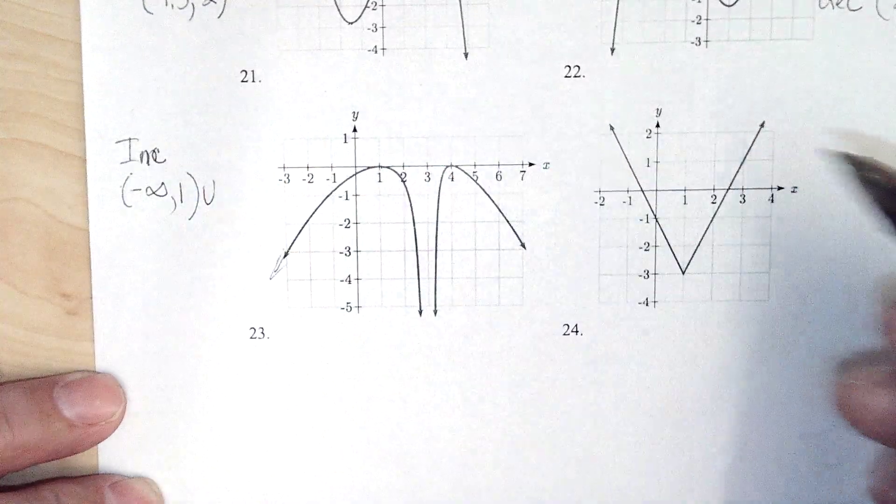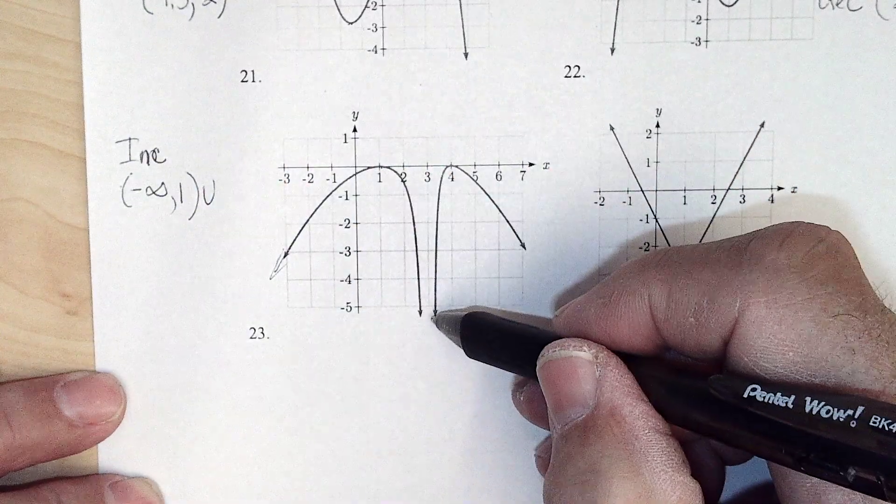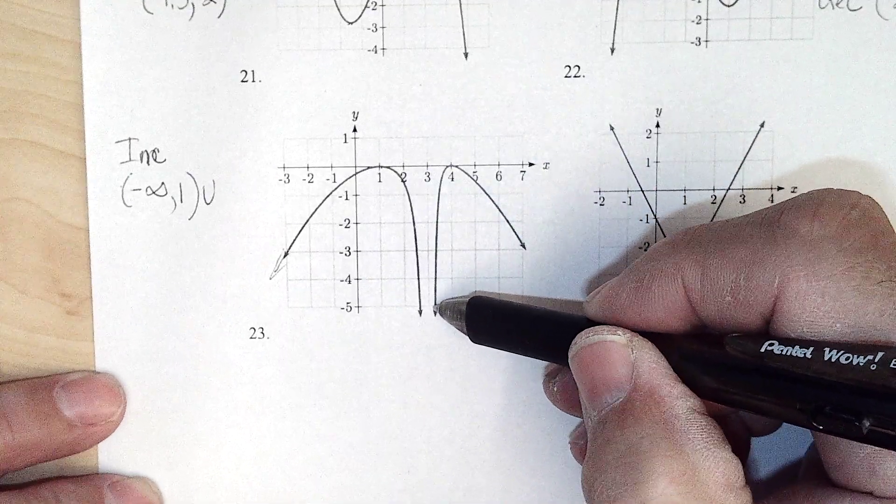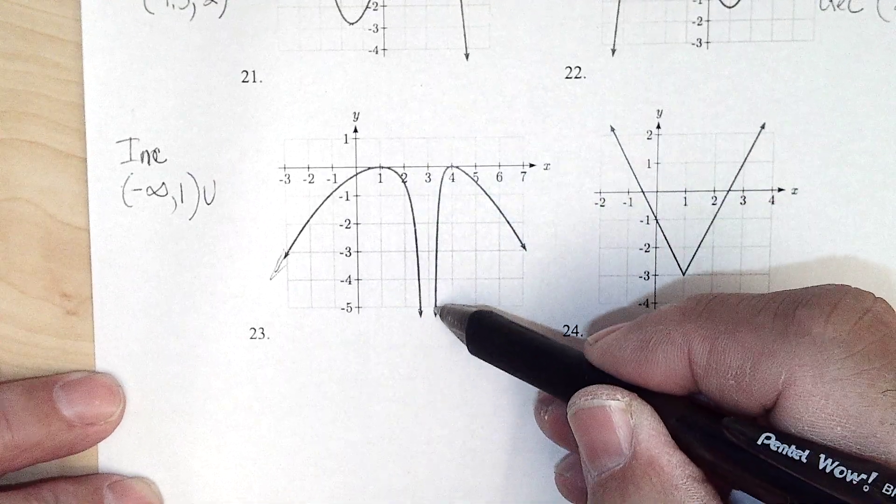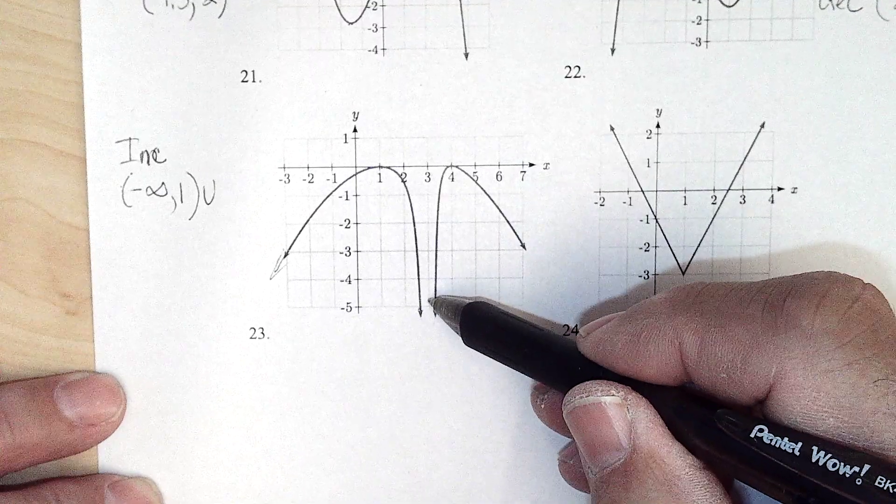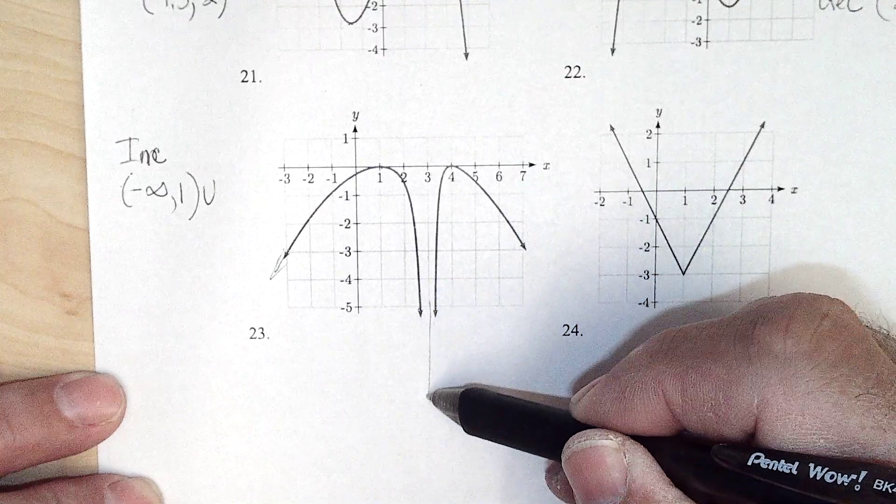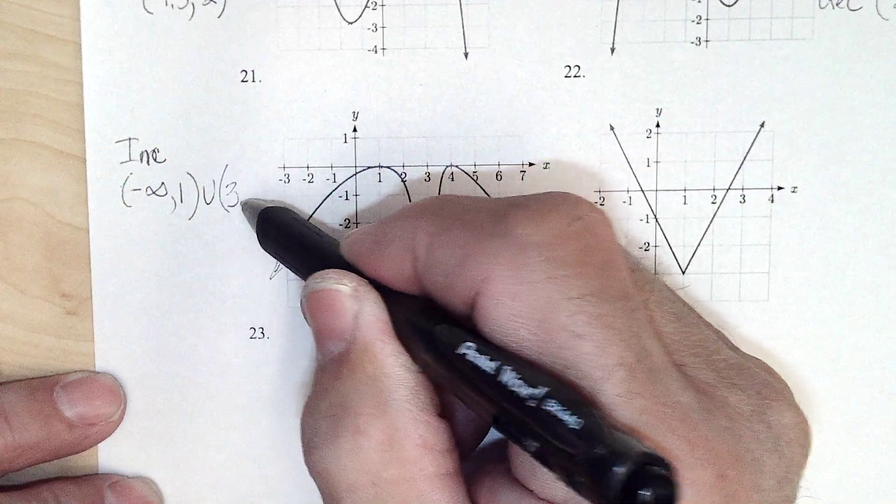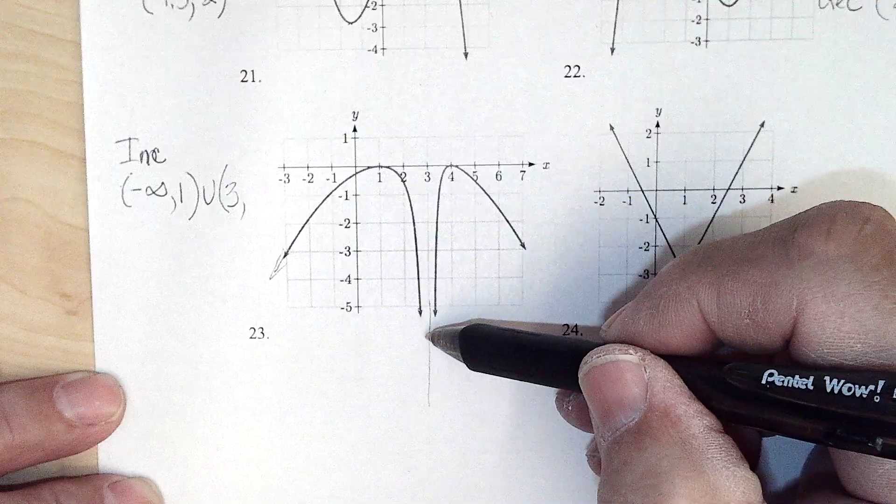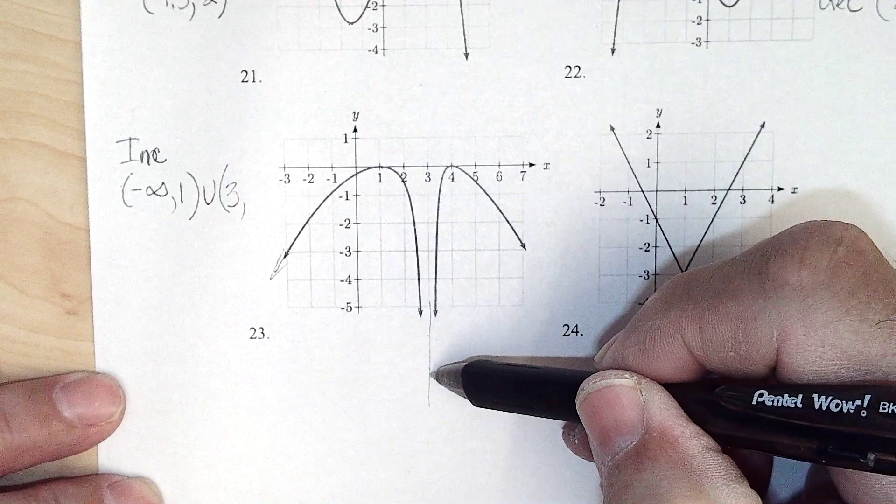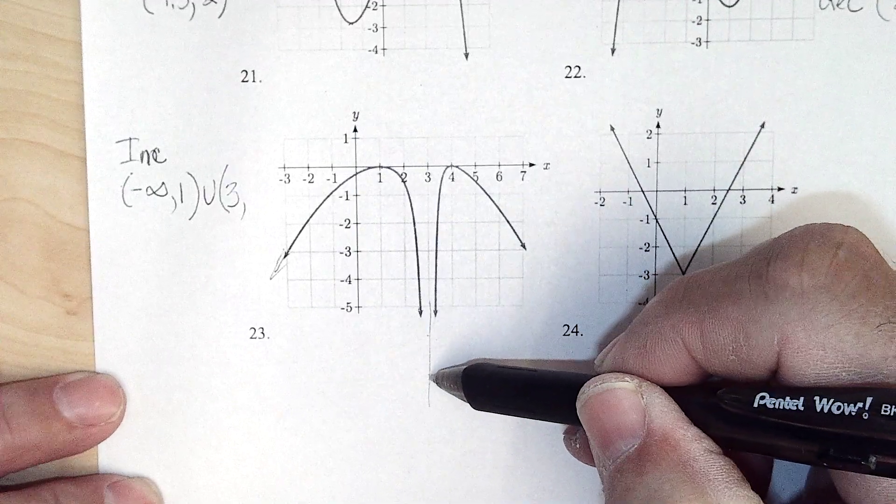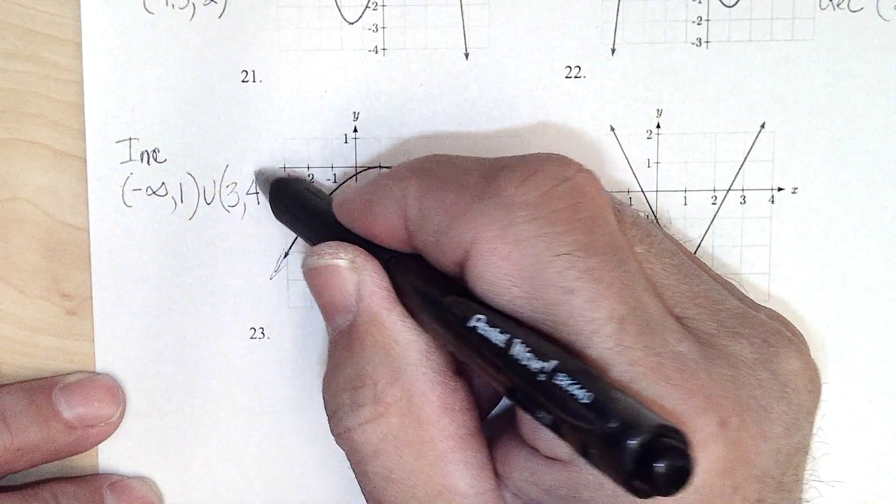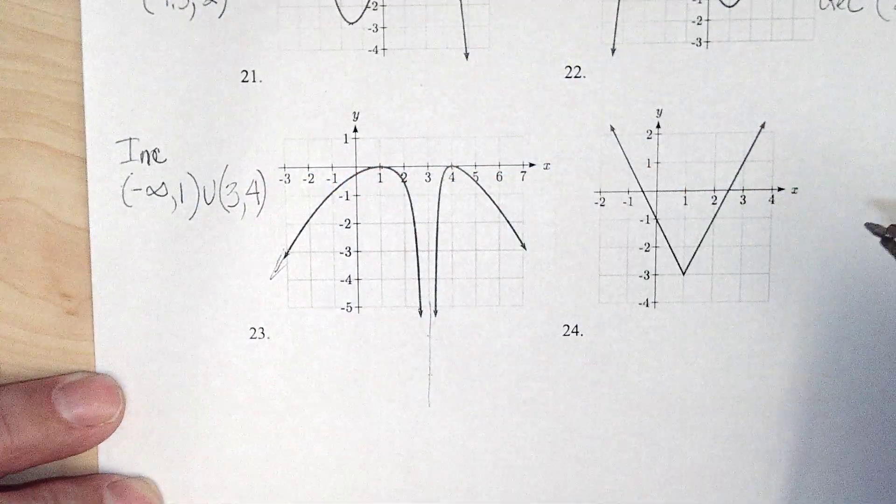And then it increases. Now the book goes from here and from here, but these arrows tell me it keeps going down, and it looks like it gets closer and closer to this 3. So I'm going to say from 3, it's not on 3, but up to just past 3 on up till 4 it increases. At 4 it's changing, so I don't include it.